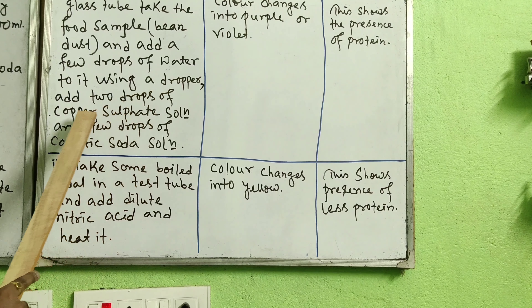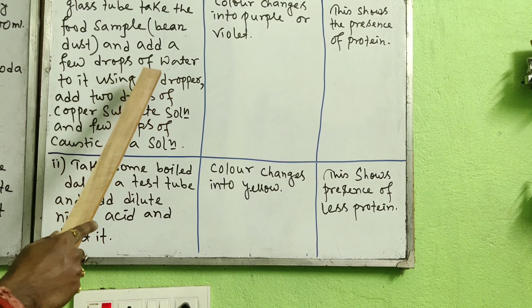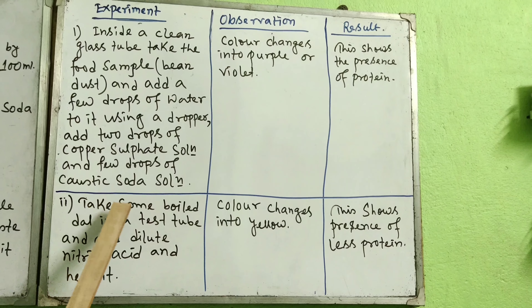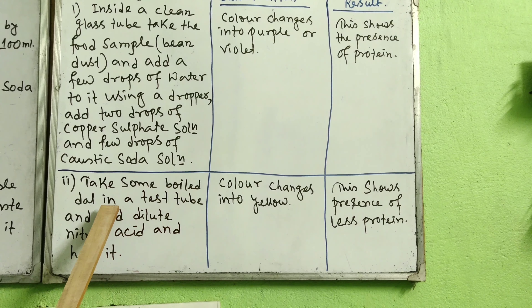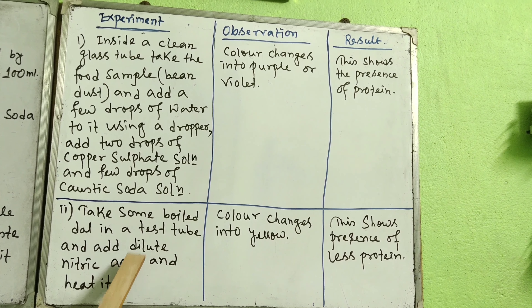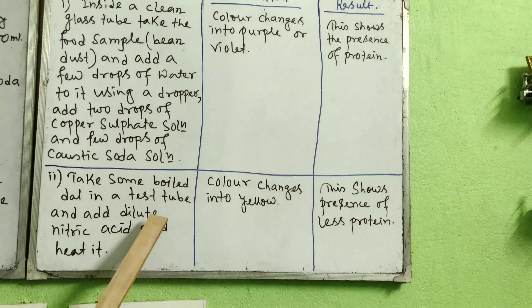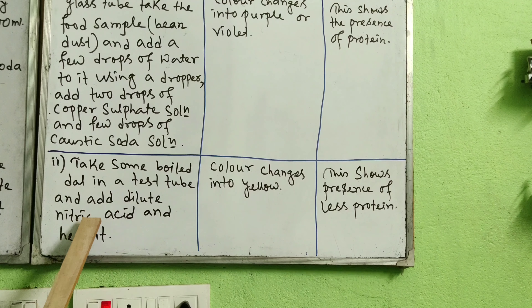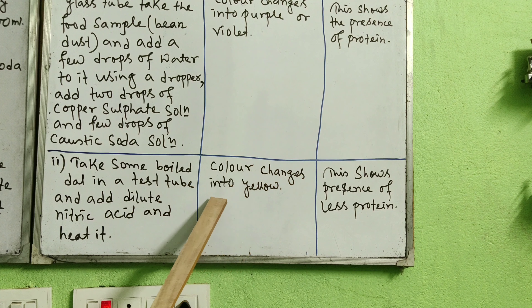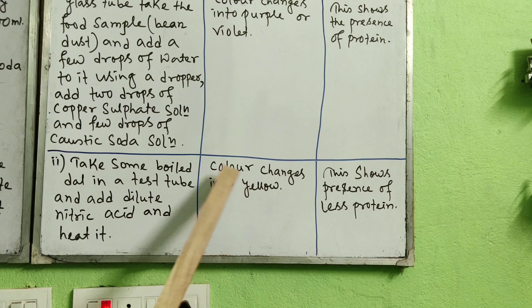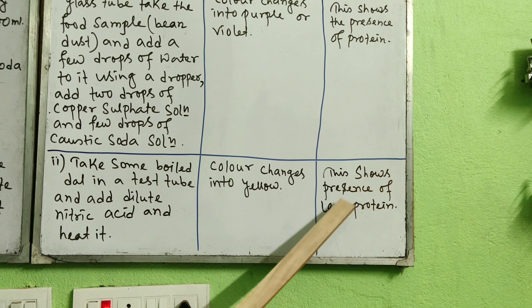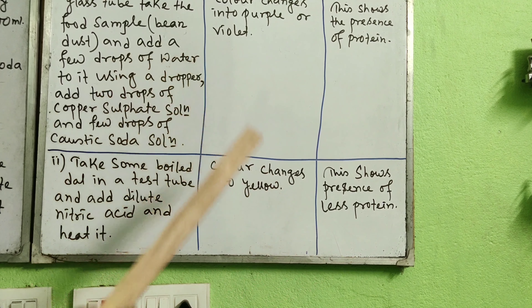For the next test with another food sample, we will not use copper sulfate or caustic soda solution. Instead, we will use diluted nitric acid. Take some boiled dal or pulse in a test tube and add dilute nitric acid with it, then heat the entire mixture. If the color changes into yellow or light yellow, that indicates the presence of less protein.